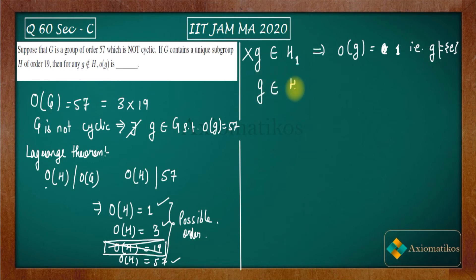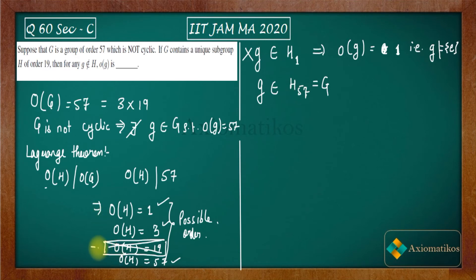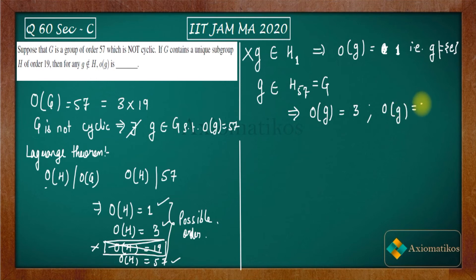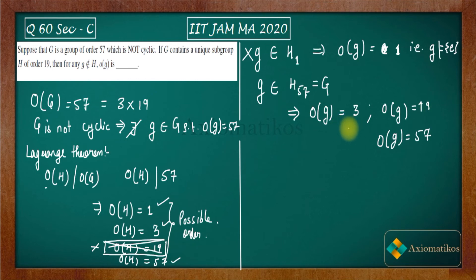Now suppose g belongs to a subgroup of order 57 — that is G itself. Inside this subgroup of order 57, g is still not inside H. By Lagrange's theorem, the order of element g must divide the order of the group, so the possible orders for g are: 3, 19, or 57.